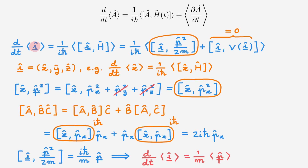Going back to the time derivative of the expectation value of the position operator, we find that it's equal to 1 over m times the expectation value of the momentum operator. This is the Ehrenfest equation for position, and looking at it, it looks suspiciously familiar — but let's keep going and we'll come back to this later.